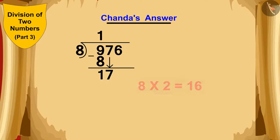Because 8 times 2 is 16, Chanda saw that she could divide 17 by 8. She immediately wrote the 2 above, and subtracted 16 from 17 below, and wrote 1. Finally, Chanda wrote down the next number, 6, next to the 1.